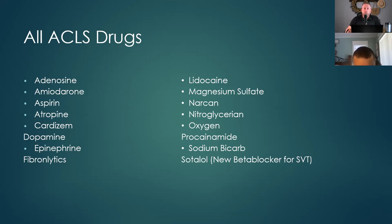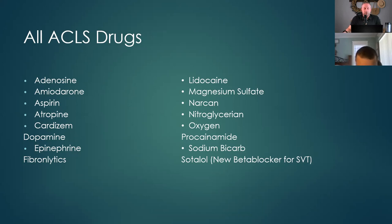Sodium bicarb — we give this to patients if they're metabolically acidotic, if they've been down or we've been working them for a super long time. We give them sodium bicarb — it's basically the whole amp, 1 milliequivalent per kilogram. A hundred-kilogram patient, we give the entire amp. Cardizem — we give that for beta blockers or SVT. It's in the algorithm but not really given a whole lot.